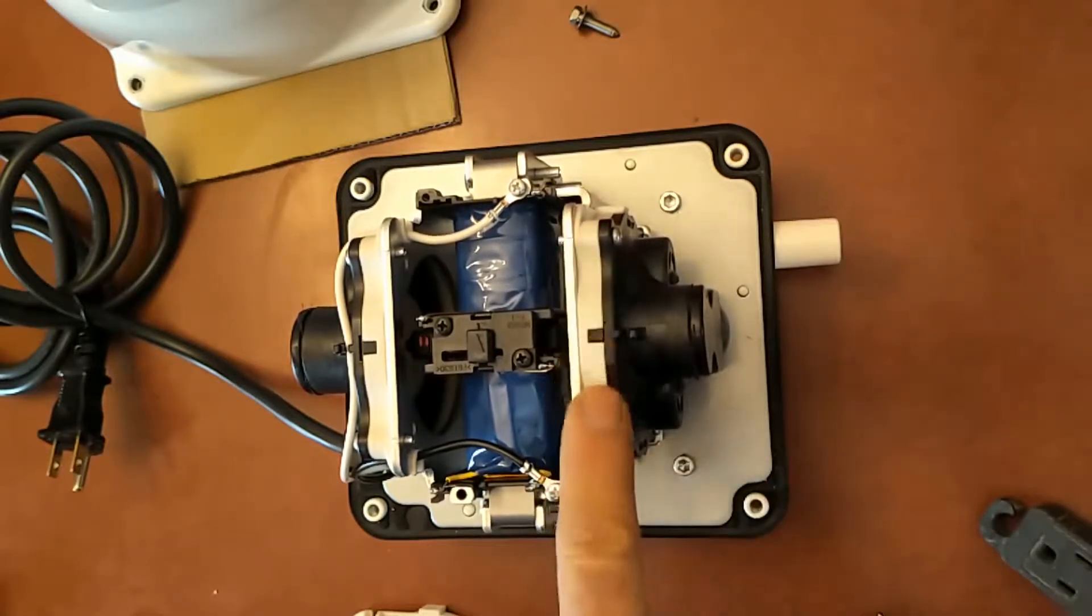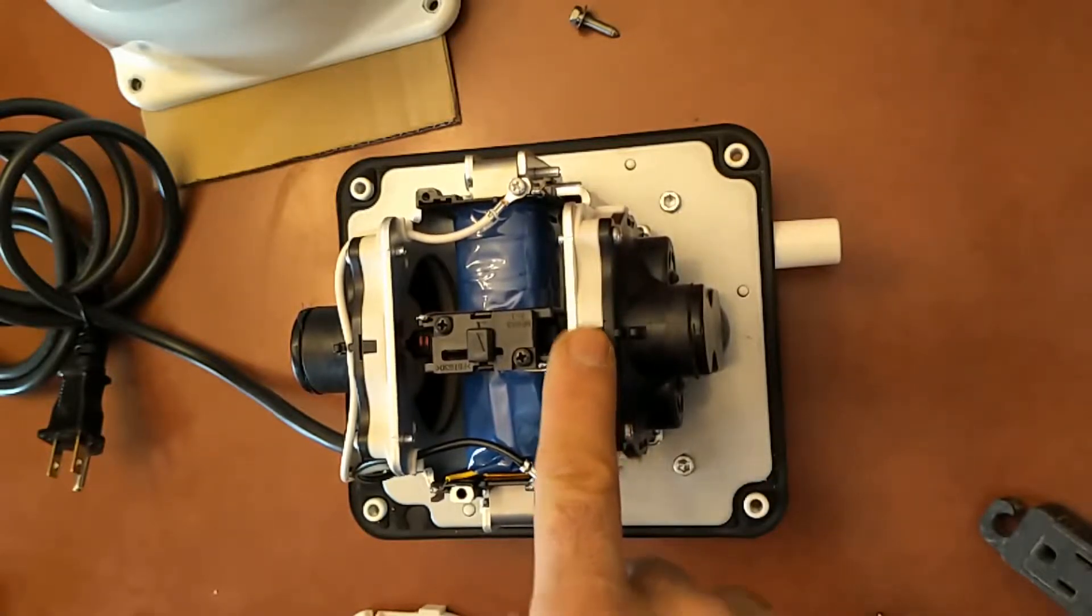The white bit here is the actual diaphragm that moves back and forth to create air pressure.